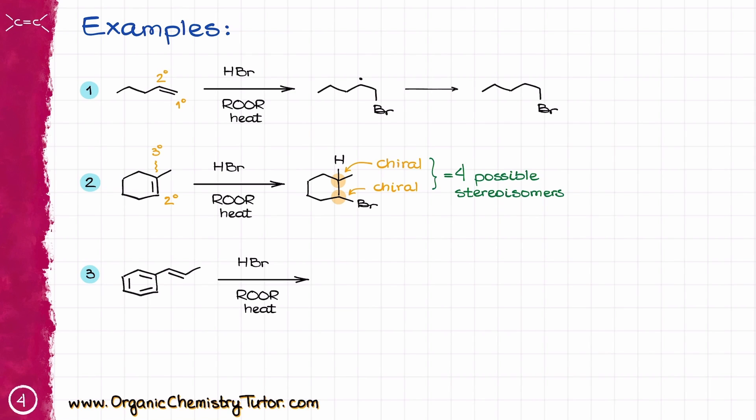For some extra practice, go ahead and draw all of them, assign the R and S stereodescriptors, and determine the stereochemical relationship between them all. You should get two pairs of enantiomers, and the rest of the relationship should be diastereomers.